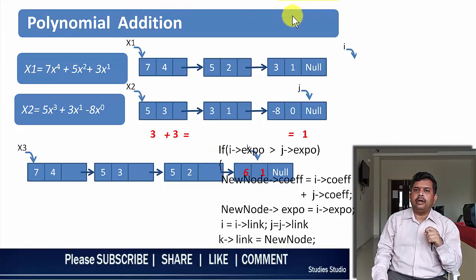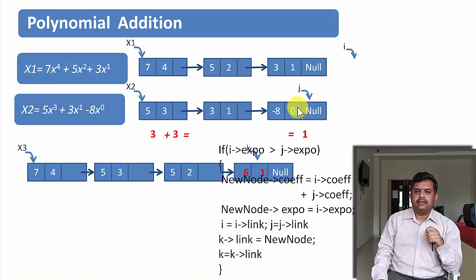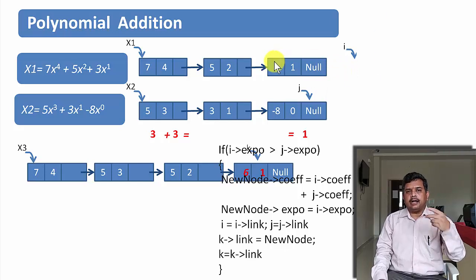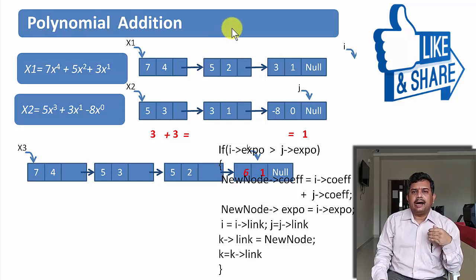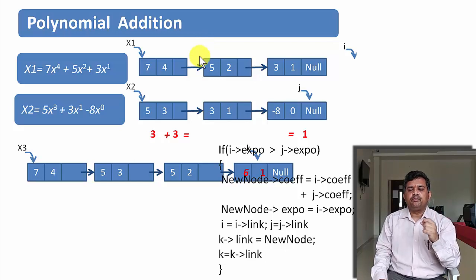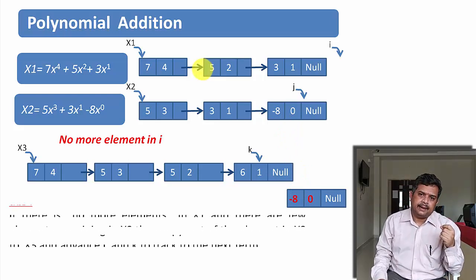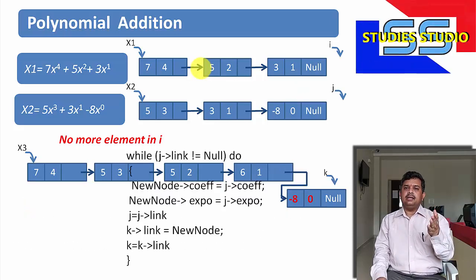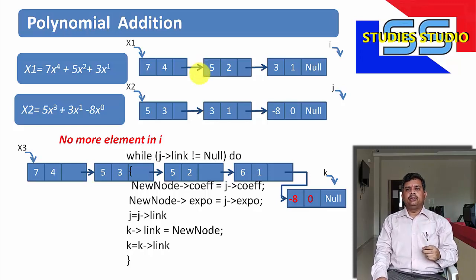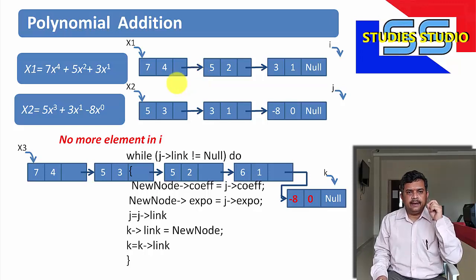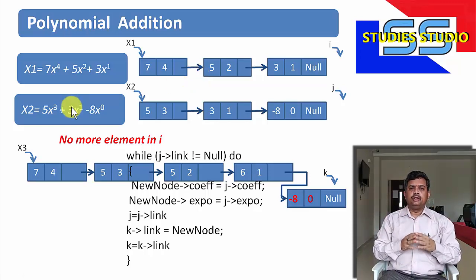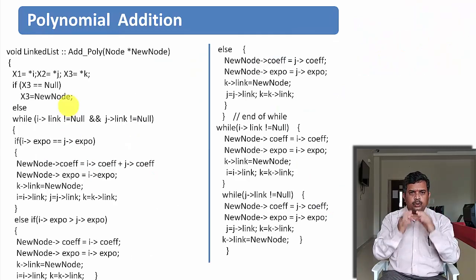Now i is pointing to null and j is pointing to the last term, which is -8x to the power 0. Whenever such a condition occurs — either i or j has reached the end — the remaining nodes of the other pointer are copied entirely to the resultant list. Here j has one remaining term, -8x to the power 0, so I copy that term as next to the node pointed by k. After this, both i and j point to null, meaning there are no more terms in x1 or x2, and the addition is complete.